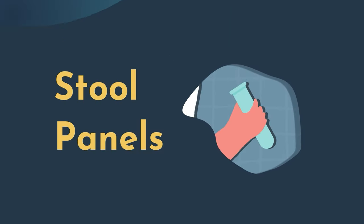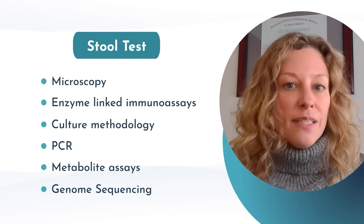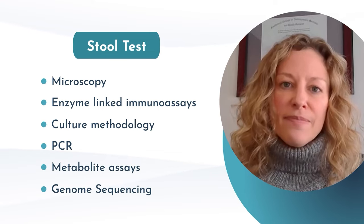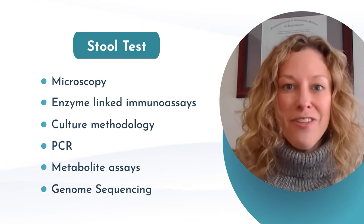Testing for dysbiosis is an important area. Testing is usually done with stool panels that assess using a variety of methods to detect beneficial, commensal, or pathogenic flora. These include microscopy, enzyme-linked immunoassays, culture methodologies, and PCR. We also look at micro metabolites and genome sequencing. Many stool panels employ several of these technologies together, giving us a very good assessment of gut health and what we need to do for our patients.